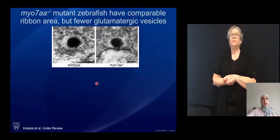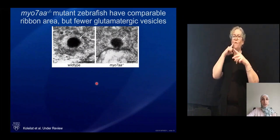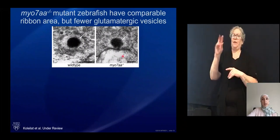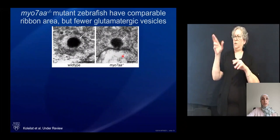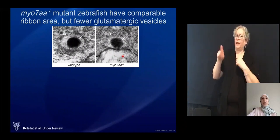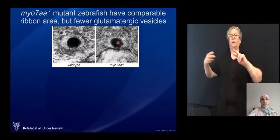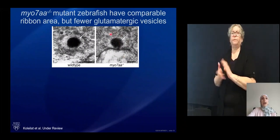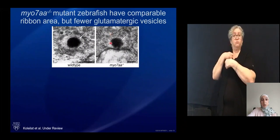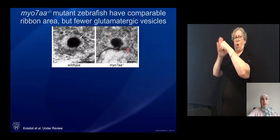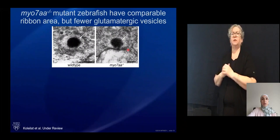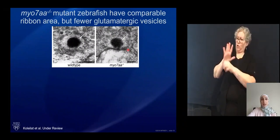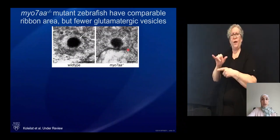We used transmission electron microscopy to capture images of the ribbon synapse. We identified that the myo-7a mutants have the machinery necessary to produce a complete synaptic ribbon with a ribbon density and a halo of glutamatergic vesicles. Not only is this structure generated, it is also localized to the synapse — something that was not known before.